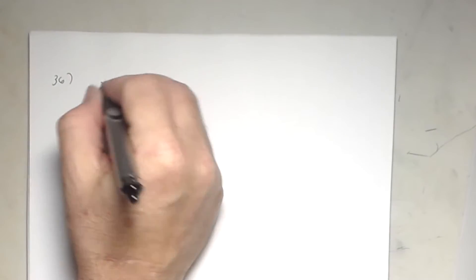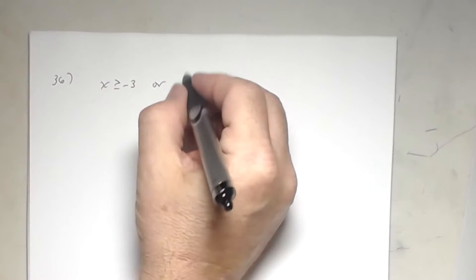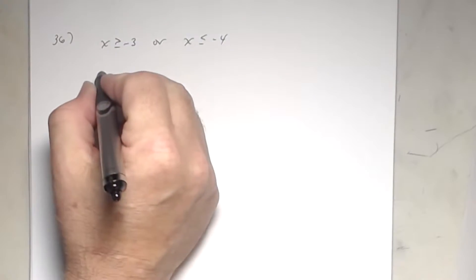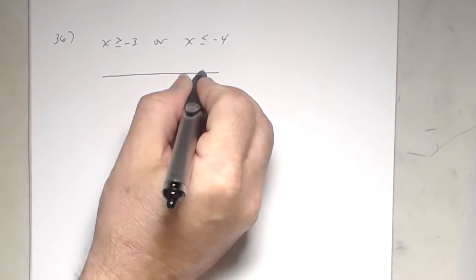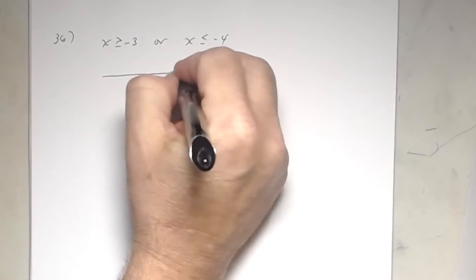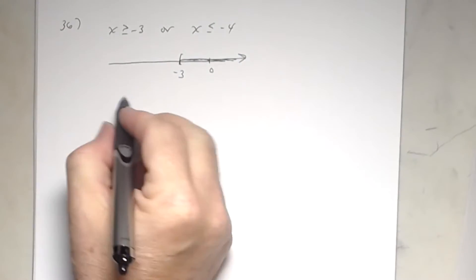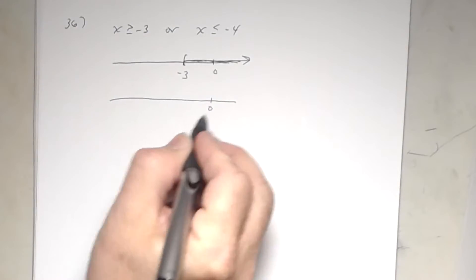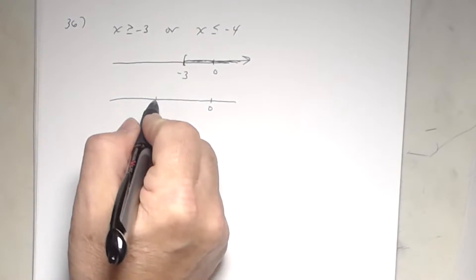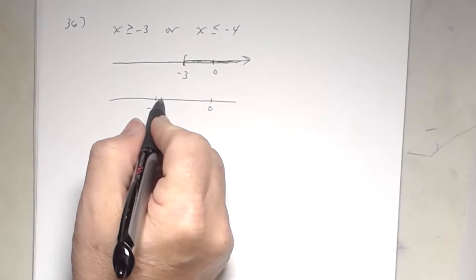Number 36: x ≥ -3 OR x ≤ -4. Graph each individually. For x ≥ -3: bracket at negative three going right. For x ≤ -4: make sure negative four is further left on the number line — bracket at negative four going left.